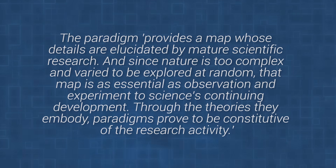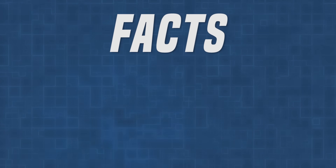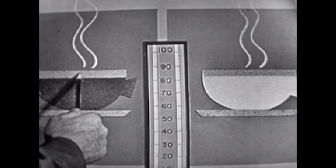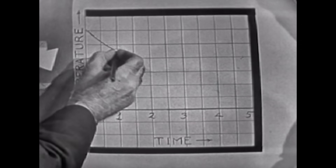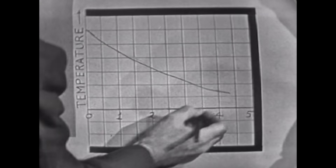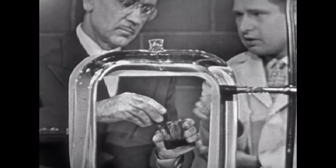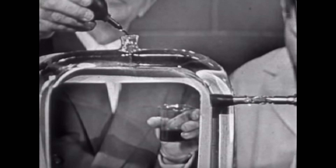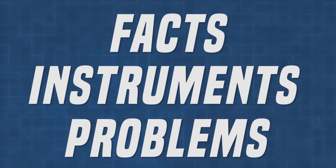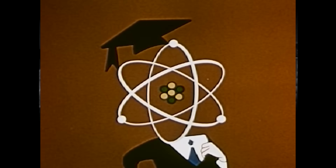Kuhn also sometimes calls this map a disciplinary matrix. The map, or disciplinary matrix, or paradigm, contains a particular selection of facts — like positions in astronomy, the mass of materials, wavelengths, boiling points, acidity levels — all that have shown to be particularly revealing of the nature of things. There are also instruments and machines that can measure and explore these things further, plus engineers that seek to improve them. Finally, there are problems — gaps in the knowledge, areas where theories need expanding or confirming.